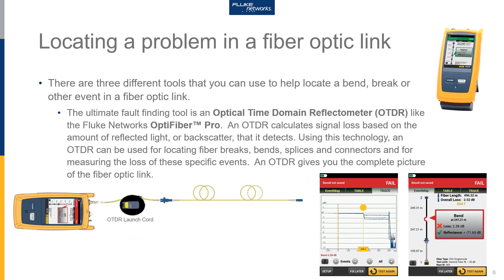If you want to consider it, the ultimate fault-finding tool for fiber optic links is the Optical Time Domain Reflectometer, or OTDR — from Fluke Networks, this is the OptiFiber Pro. An OTDR calculates signal loss based on the amount of reflected light, or backscatter, that it detects. Using this technology, an OTDR can be used for locating fiber breaks, bends, splices, and connectors with issues, and it will measure the loss of these specific events.